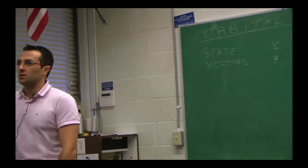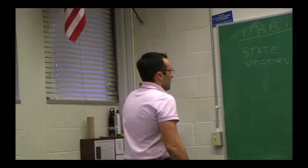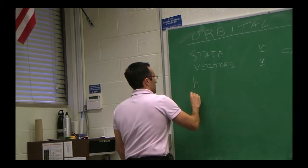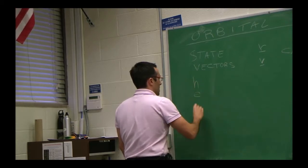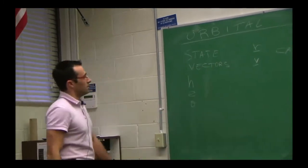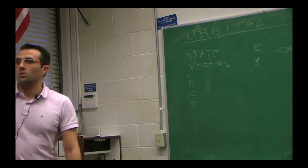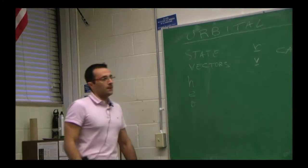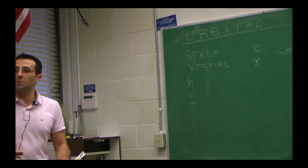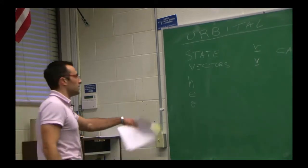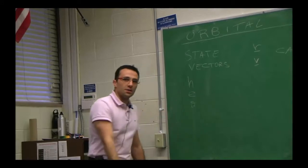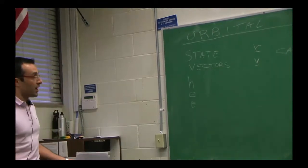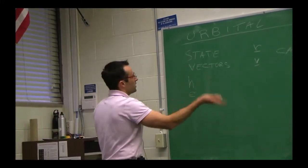The usual combination starts with reusing quantities we've already defined: the angular momentum h, its magnitude, and the eccentricity e, plus the true anomaly. Things that allowed us to work in the plane so far are still there. We need to add three more, which will give us the orientation of the orbital plane in ECI. Those are usually ordered angles — a particular sequence called 3-1-3.